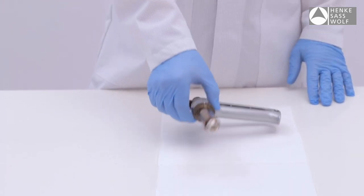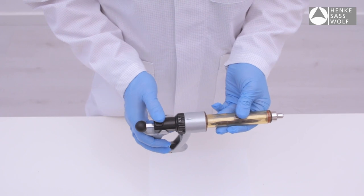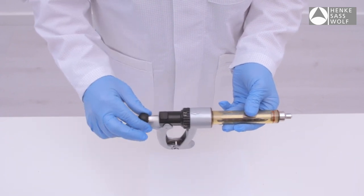Prior to disinfection, the syringe has to be disassembled. In order to do so, press the locking sleeve and pull back the piston rod.